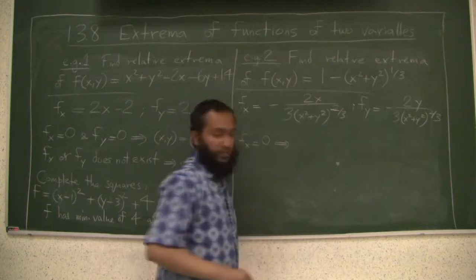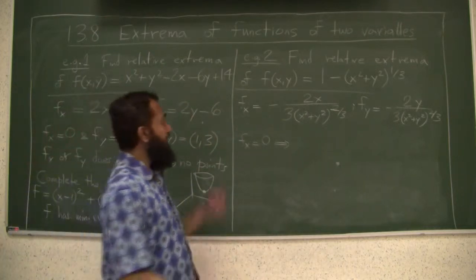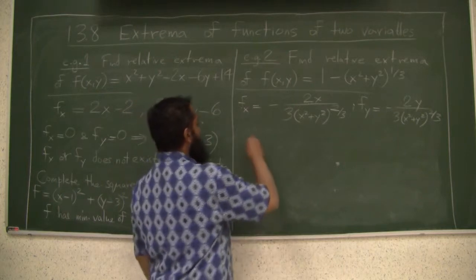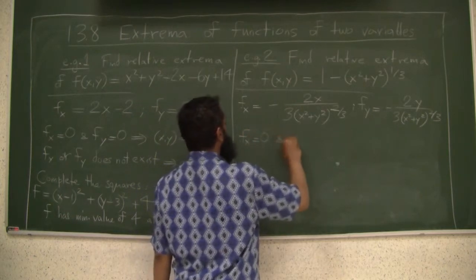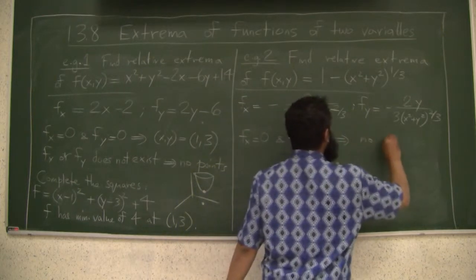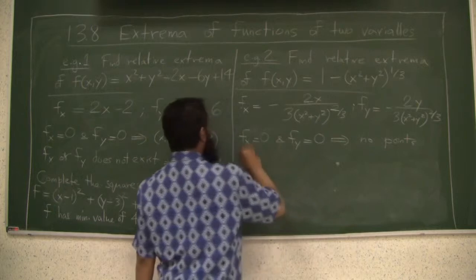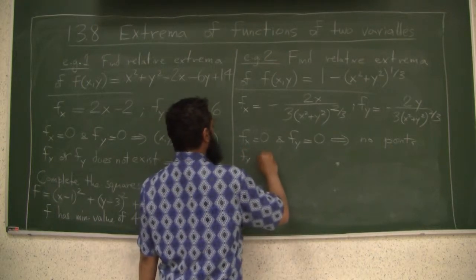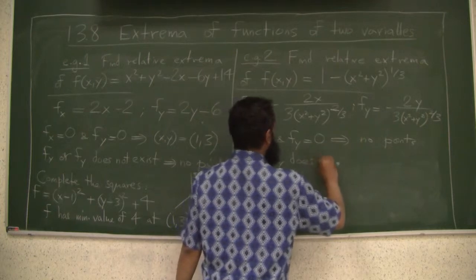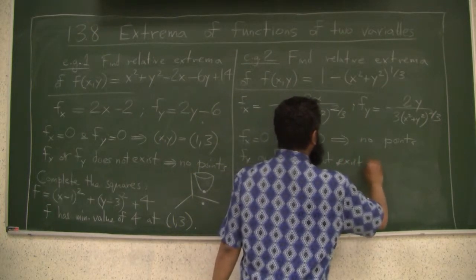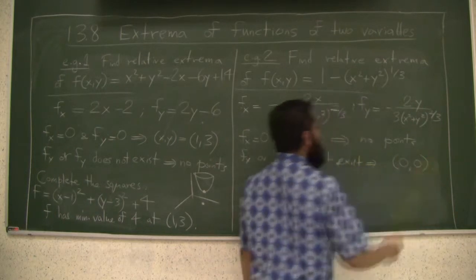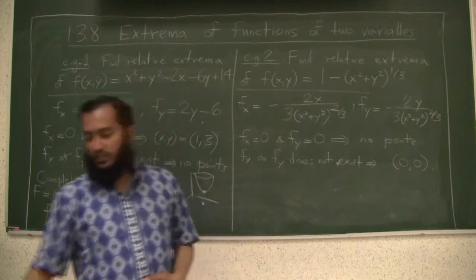So to get both of these to be zero, the only way that can happen is actually x and y are both zero, but then they are not really zero at that point. So if you want to say f of x zero and f of y equals zero, there are none. If you say that f of x or f of y does not exist, you get (0, 0). At zero zero these partials don't exist.